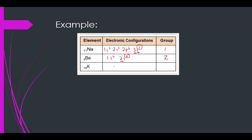What about K? K has 19 electrons. So: 1s2, 2s2, 2p6, 3s2, 3p6, 4s1. Calculating: 6 plus 2 plus 2 is 10; 10 plus 2 is 12; 12 plus 6 is 18; plus 1 is 19. The outermost shell is n=4, with 1 electron. So potassium is group 1.